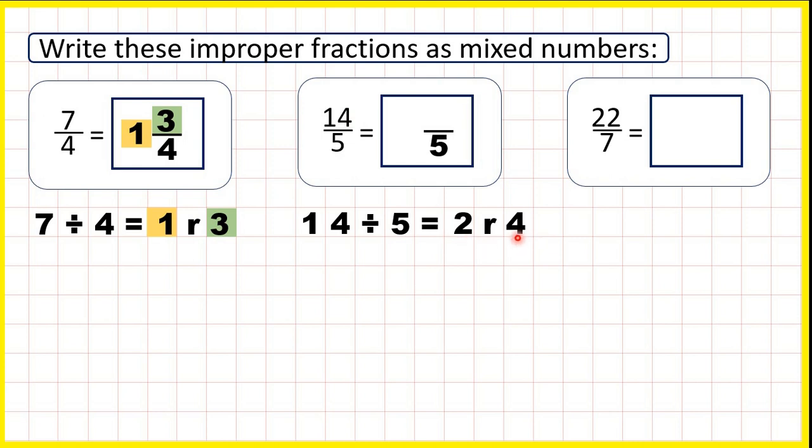That's 2 remainder 4, because 2 times 5 is 10, but then from 10, we need 4 more to get to 14.